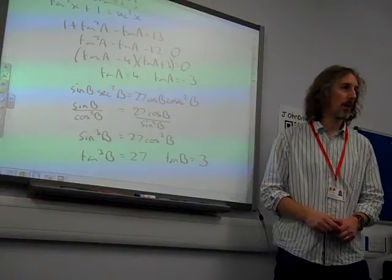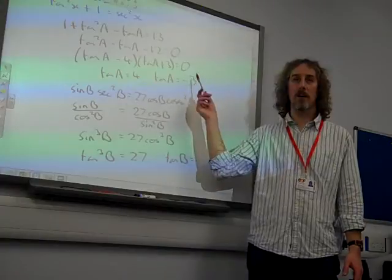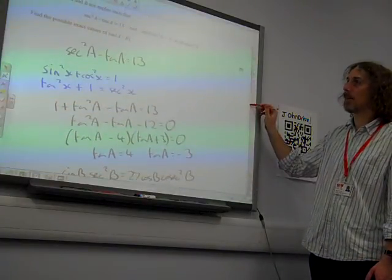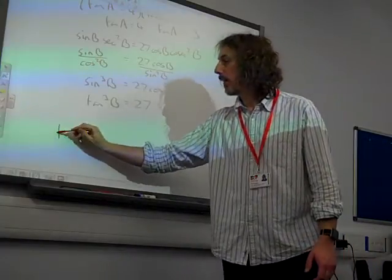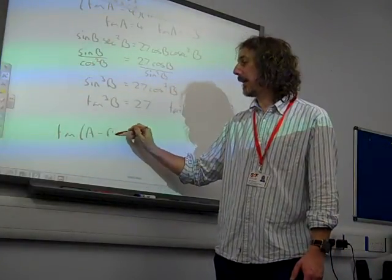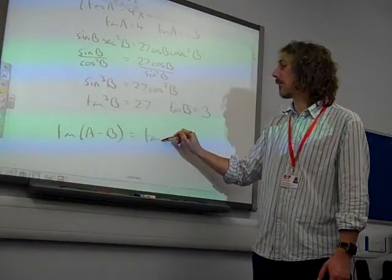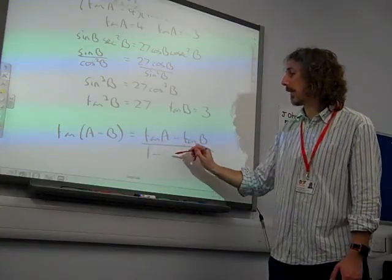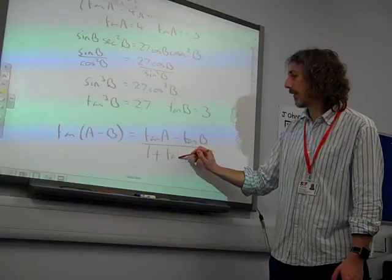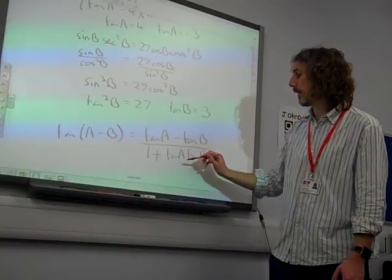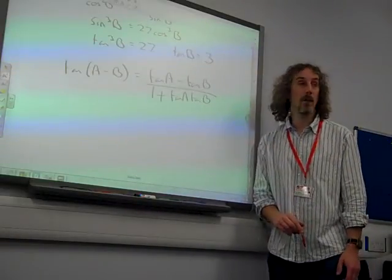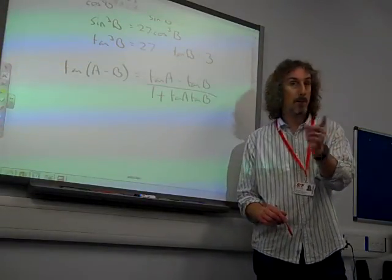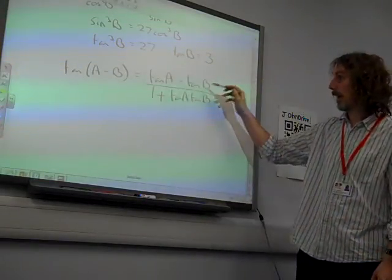We've got that tan A is either 4 or minus 3. Tan B is 3. We're doing tan of A minus B. So tan(A - B), which is tan A minus tan B over 1 plus tan A tan B. We've got a few values that we can plug into that now. Notice we haven't found what A and B are. We've found what tan A and tan B are.